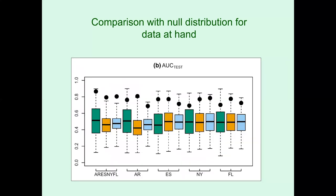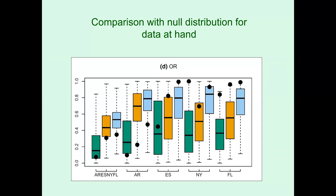Some results from that study with the monk parakeet: with AUC, almost all of the real models — indicated by the black circle — ended up being significantly better than random, across various study regions used for testing. However, for omission rate, very few ended up being significant. It was a rather humbling experience, comparing with the test used in my dissertation, which it turns out violates assumptions we weren't even thinking about at the time. But now we can assess omission rate via these null model approaches.